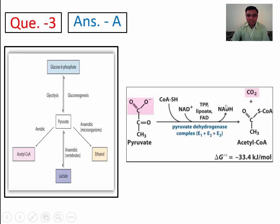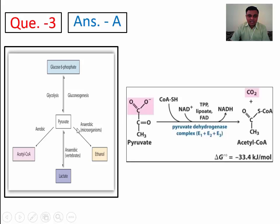In the pyruvate dehydrogenase complex, vitamins serve as coenzymes. TPP, that is thiamine pyrophosphate, works as a coenzyme. The name itself suggests it is derived from vitamin B1, that is thiamine. In case of thiamine deficiency, the pyruvate dehydrogenase complex cannot work adequately, leading to accumulation of pyruvate, which then takes the alternate pathway to be converted into lactate.